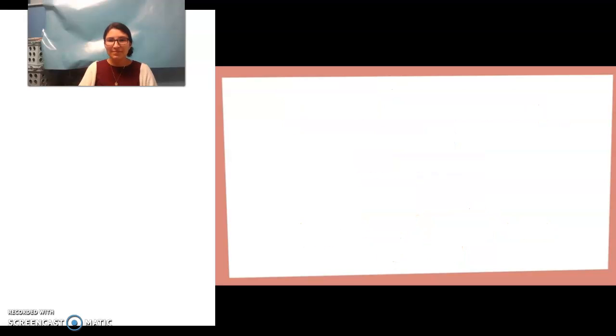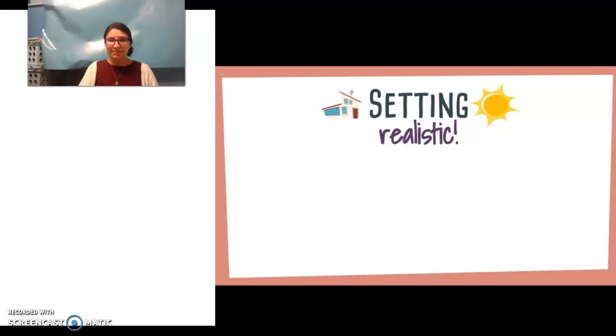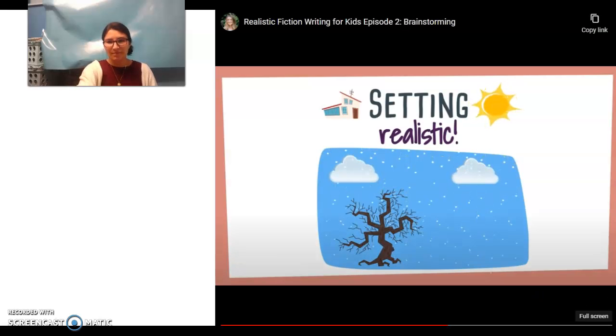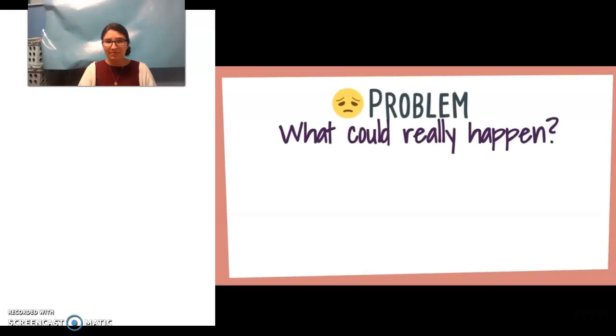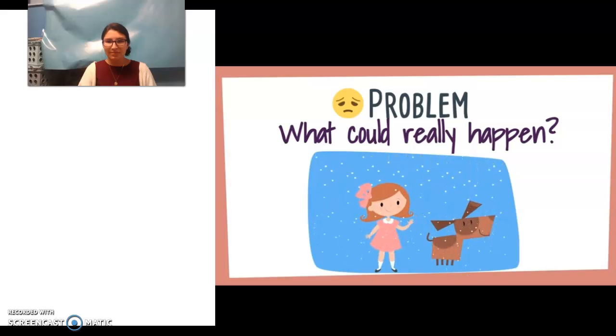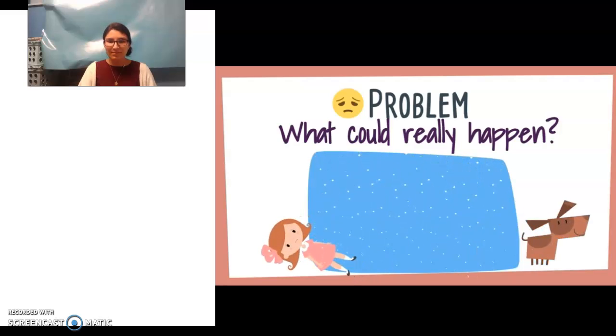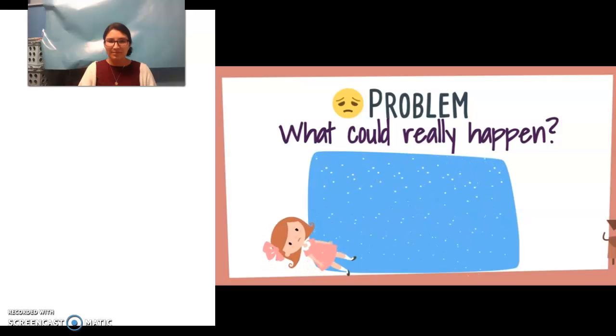Next, I need to decide on a setting. The setting is where and when the story takes place. It has to be realistic, though. I think I want to make my story take place outside on a snowy day. Now I need to think of a problem. What could really happen to a little girl and her dog on a snowy day? Maybe Mary slips on the ice and Sam gets loose. That would definitely be a problem.